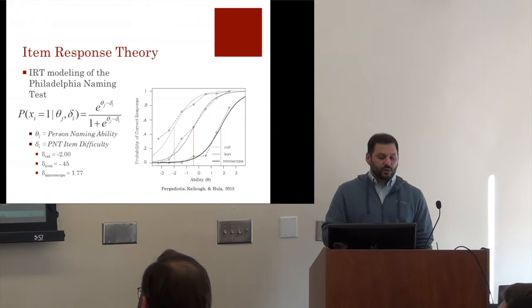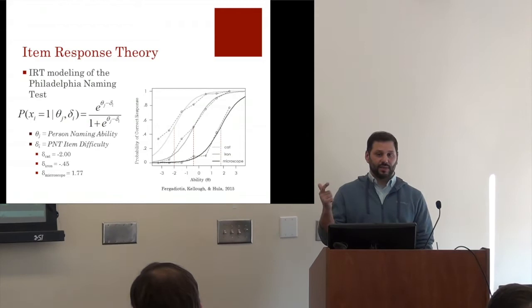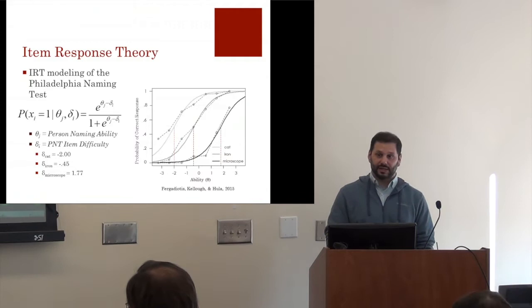IRT allows us to predict the probability that a person will respond correctly to a given item as a function of the person's ability level and the item's difficulty. Unlike classical test theory, on which current confrontation naming tests are based, IRT models the responses to every specific item within a test.